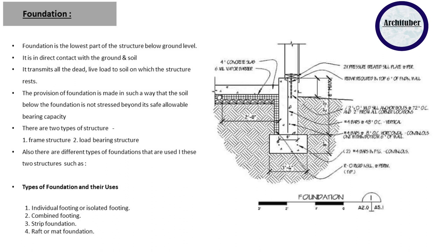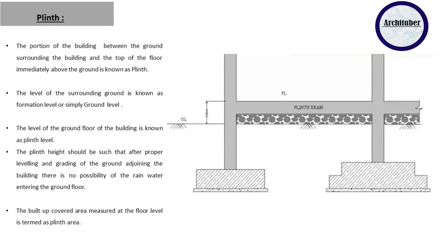After foundation, you come to plinth level. The surrounding ground is known as formation level or simply ground level. Above that, you have your plinth level. The portion of the building between the ground surrounding the building and the top of the floor immediately above the ground is known as plinth. The plinth height should be such that after proper leveling and grading of the ground adjoining the building, there is no possibility of rainwater entering the ground floor. The built-up covered measured area at that floor level is termed as plinth area.